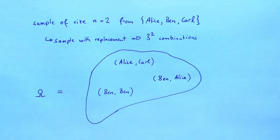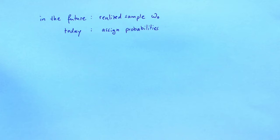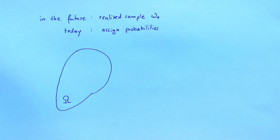The set is denoted by the Greek capital letter Omega and is called the sample space. In the future, we will know which of the possible samples we ended up drawing — this is called the realized sample and we denote it by Omega naught. Today, we don't know what the future will bring, but we can assign probabilities to samples. Let's look at our sample space: pick one of its elements, one possible sample. Let's call it Omega.